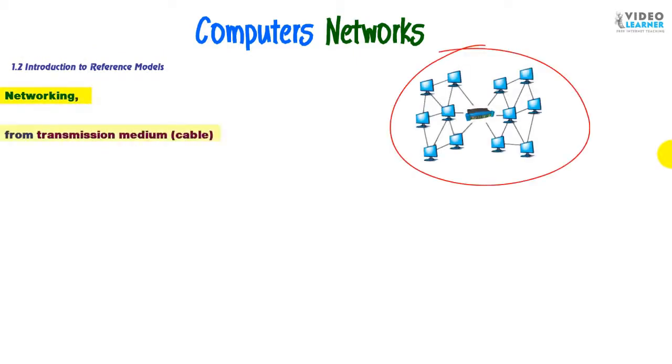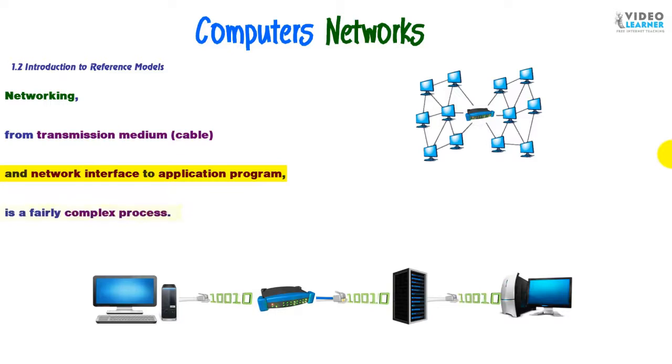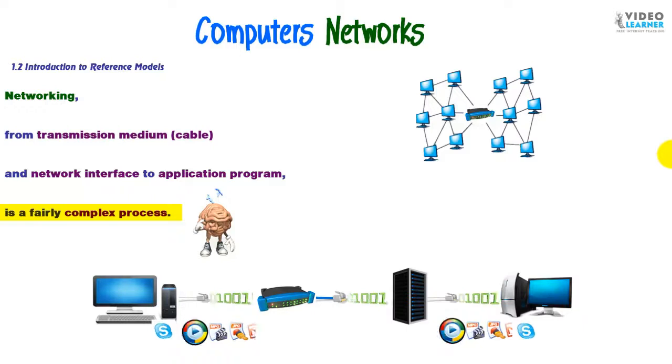Let's go. Networking from transmission medium as a cable and network interface to application program is a fairly complex process. It's very difficult. So what happens? How does information travel from here to an end destination?